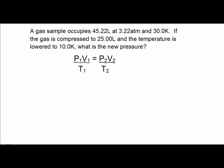Here's a problem I'd like you to try. The gas sample occupies 45.22 liters at 3.22 atm and 30 degrees Kelvin. If the gas is compressed to 25 liters and the temperature is lowered to 10 degrees Kelvin, what is the new pressure? So pause the video, try that out, and come back and check your answer.